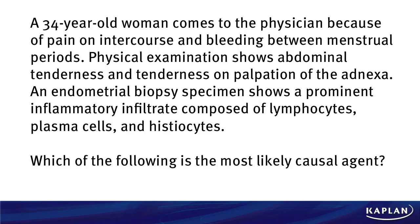Today, we have a 34-year-old woman who comes to the physician because of pain on intercourse and bleeding between menstrual periods. Physical examination shows abdominal tenderness and tenderness on palpation of the Annexa. An endometrial biopsy specimen shows a prominent inflammatory infiltrate composed of lymphocytes, plasma cells, and histiocytes. Which of the following is the most likely causal agent?